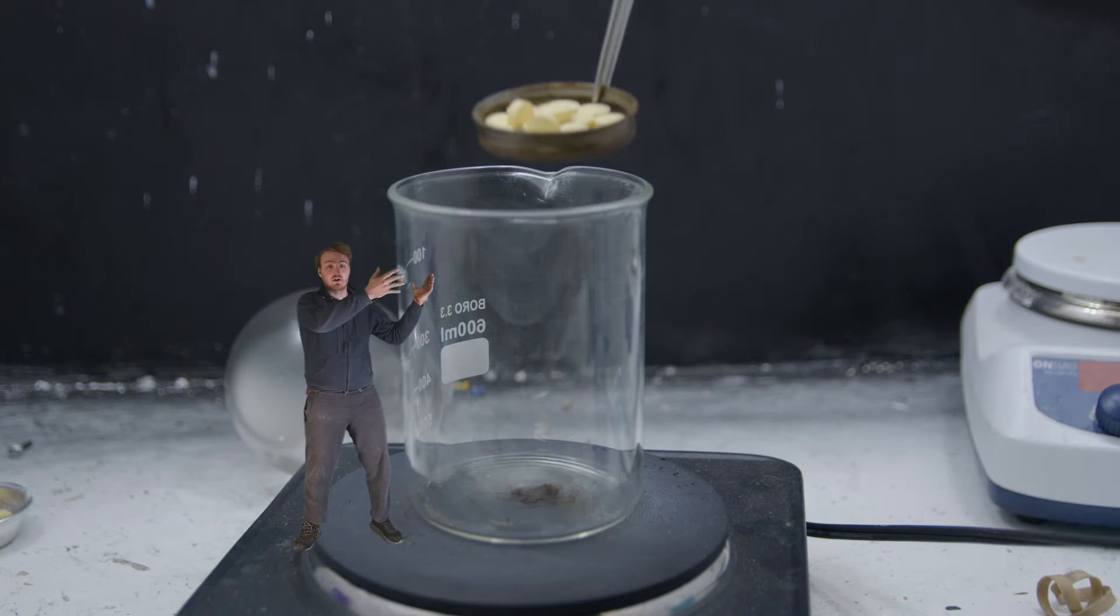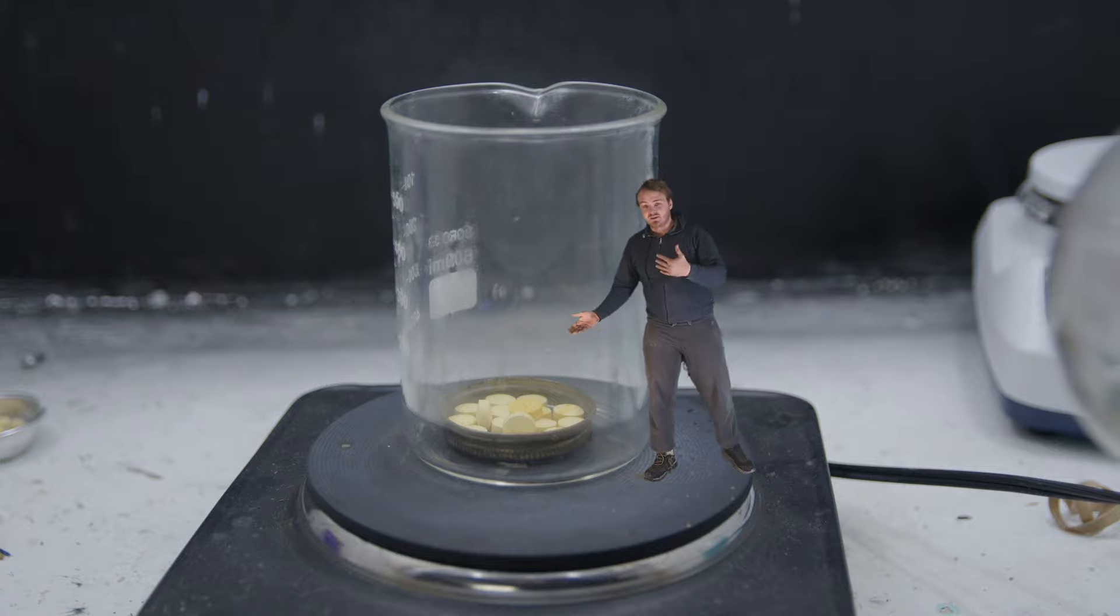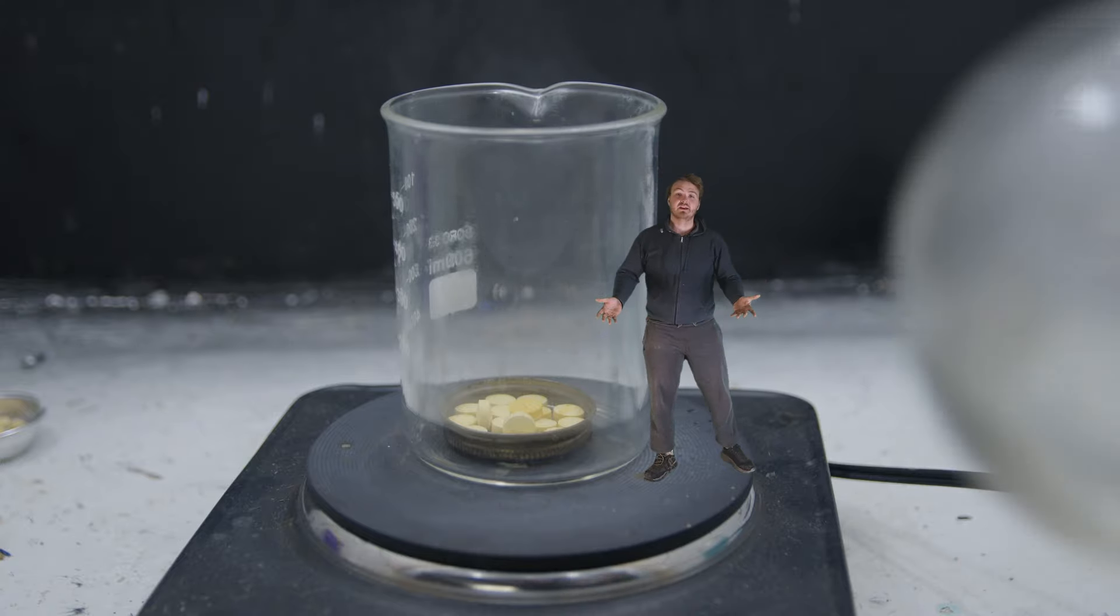What we're going to do first is take the caffeine pills and put them in a metal dish like this, then put the metal dish into the beaker. We're going to start to heat up the beaker, and the little metal dish with all the pills inside is going to get heated up as well.